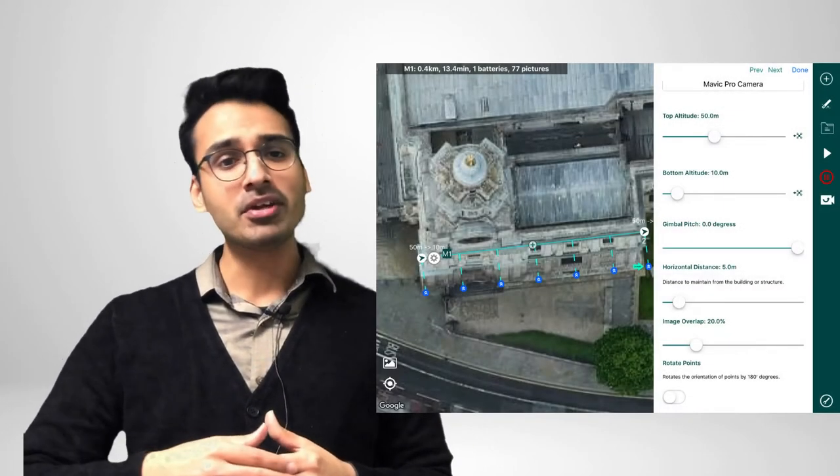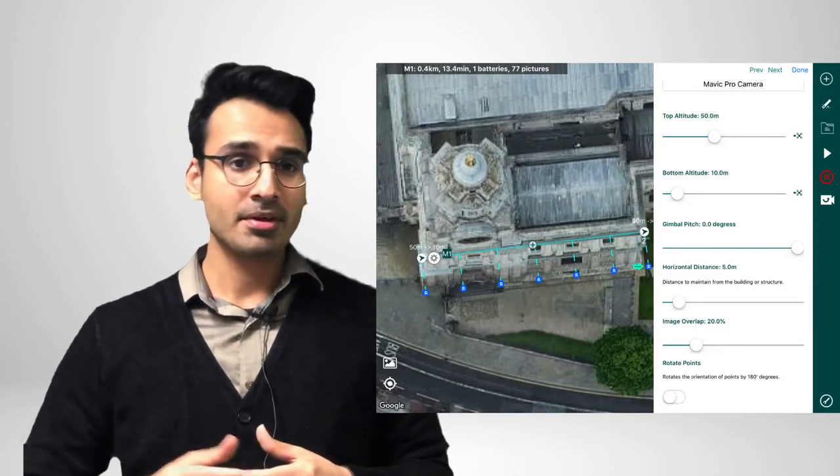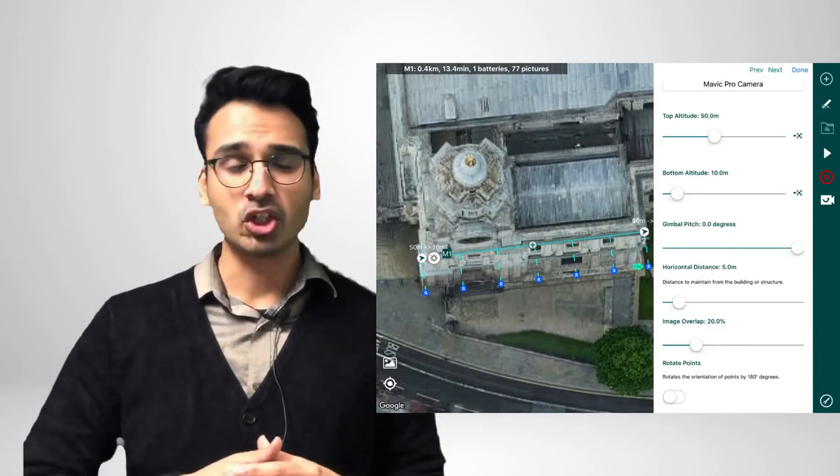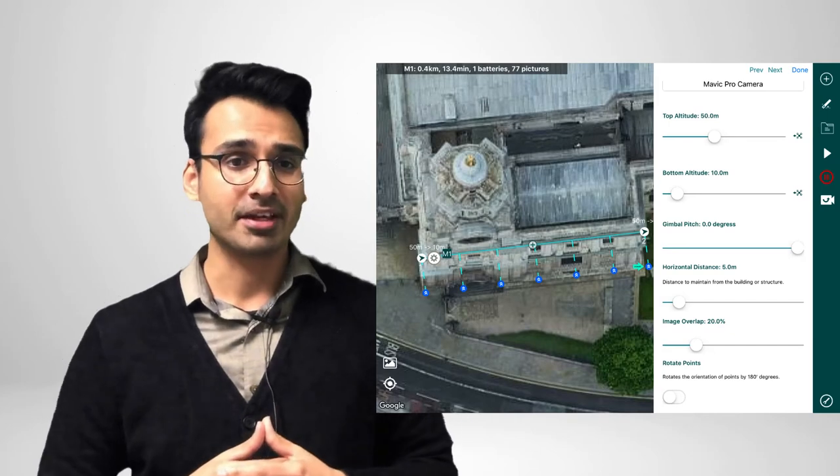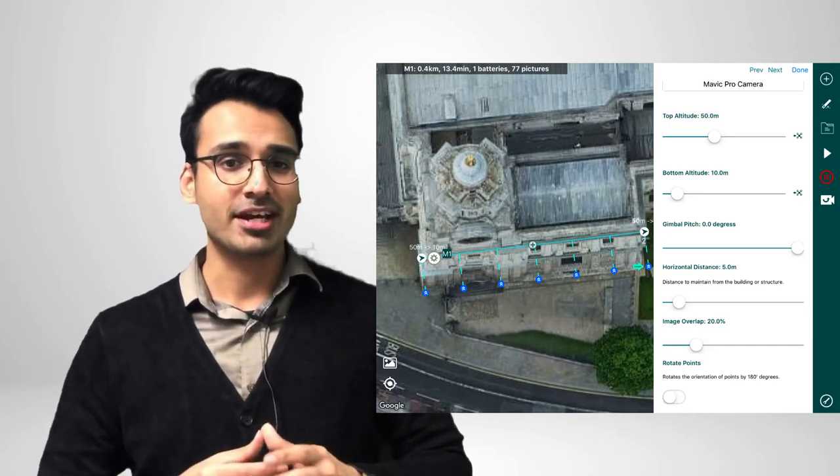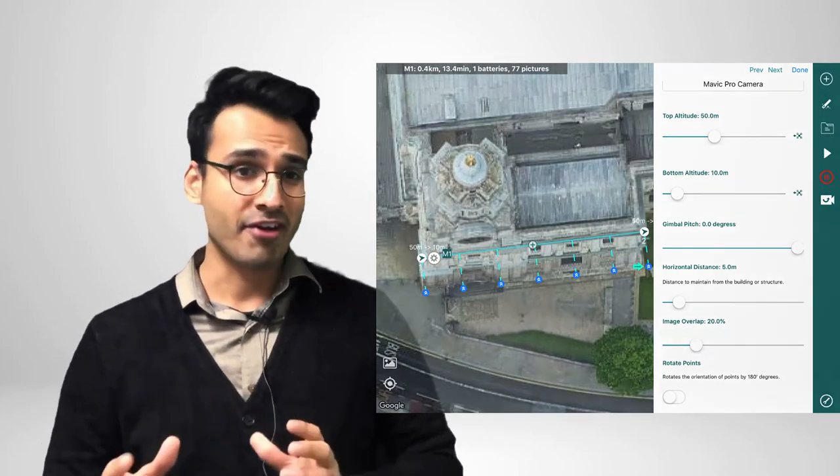Once again, we've made this process super simple for you in HAMMER missions. Simply select the horizontal distance you want to keep from the building, your desired overlap. We recommend 20% for inspections and 70% for photogrammetry applications, and also your camera type and then HAMMER will take care of the rest. It will calculate the most optimal positions for the drone to take photos during the flight.